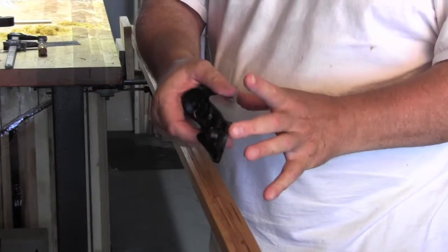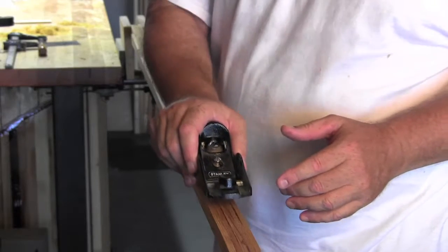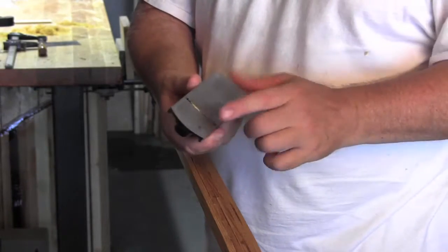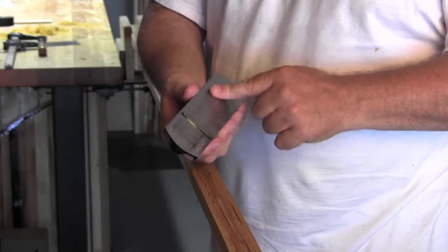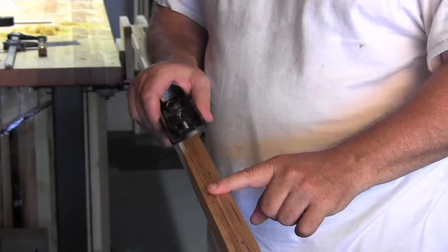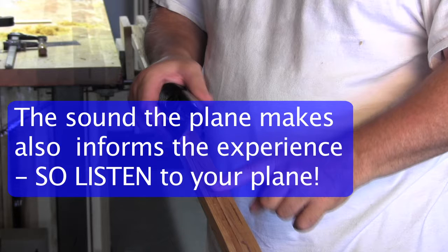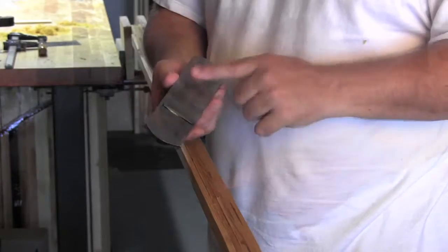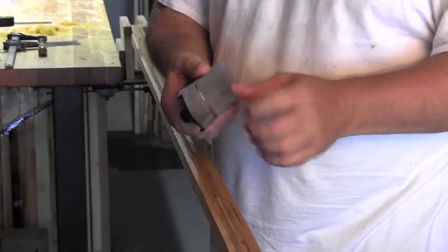The plane is always going to work best when it's got at least six inches and you really want to take advantage of the flatness of the sole here. That tells you that the surface you're working is approaching the flatness of the sole ultimately.